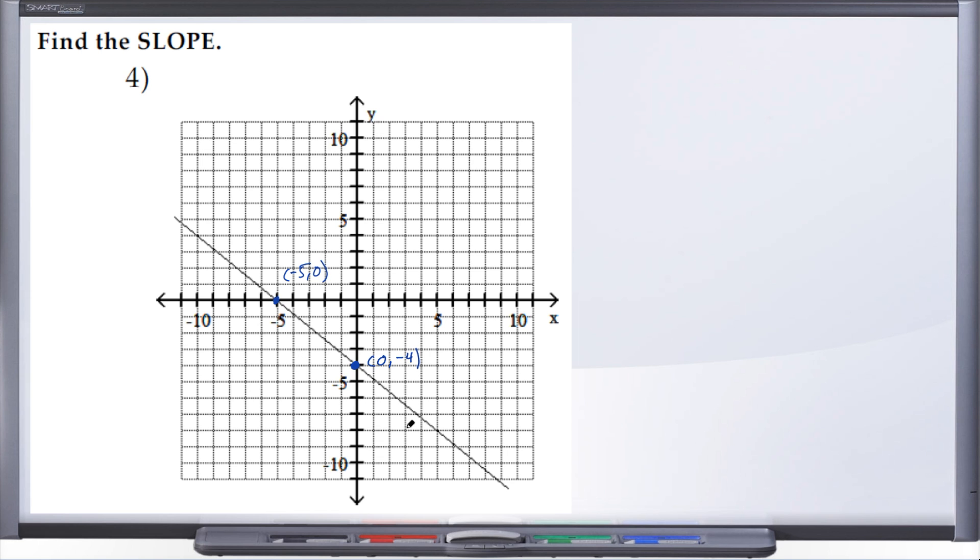All right, so we have (-5, 0) and (0, -4). So now what we're going to do, now that we have two points, is let's go ahead and label them: x₁, y₁, x₂, y₂. And we're going to use the same formula that we used in question number three.